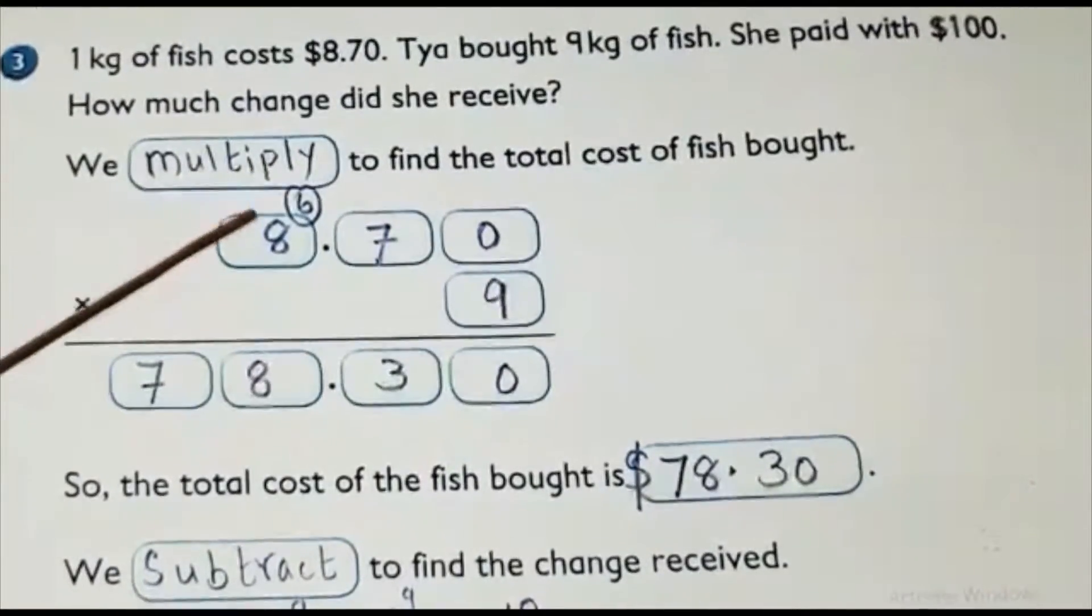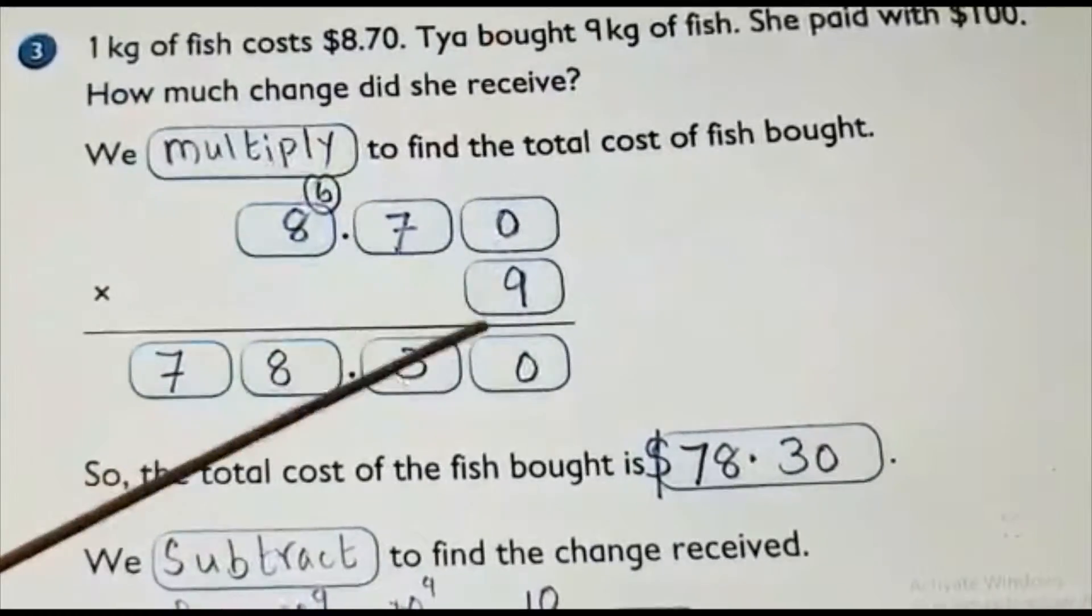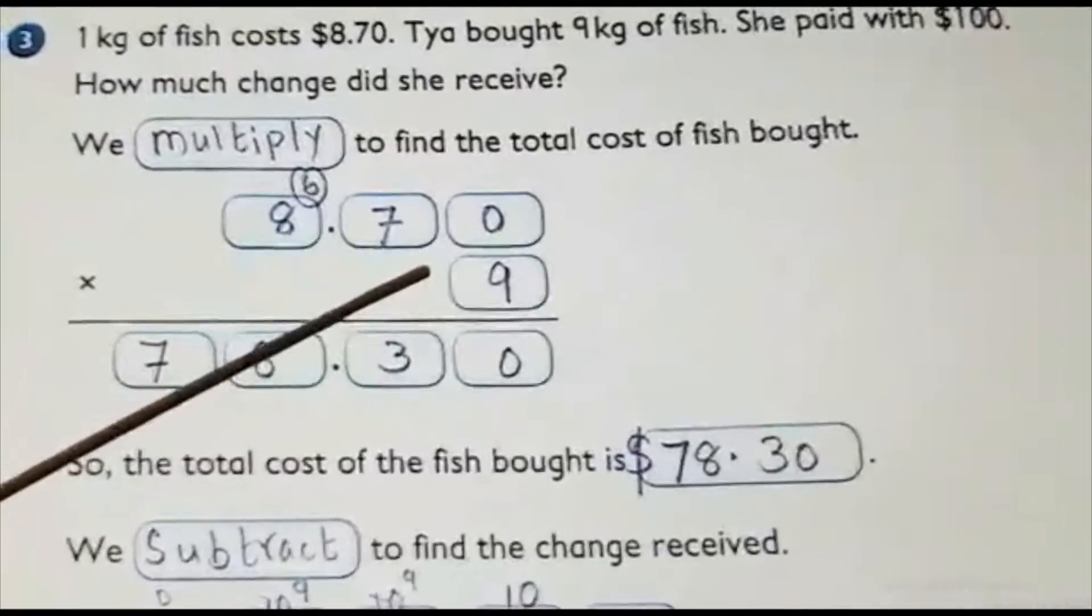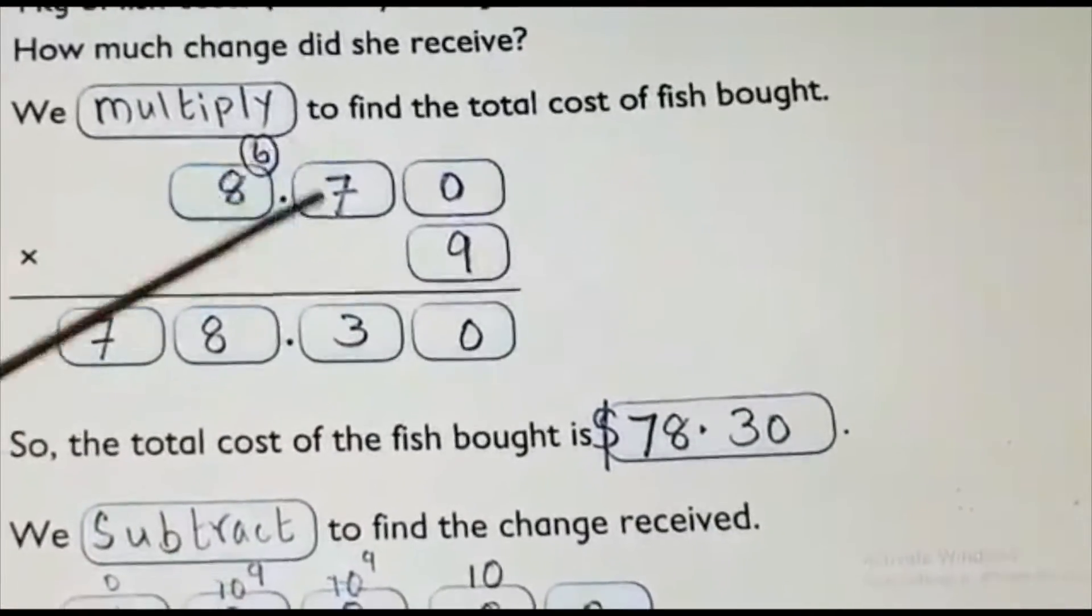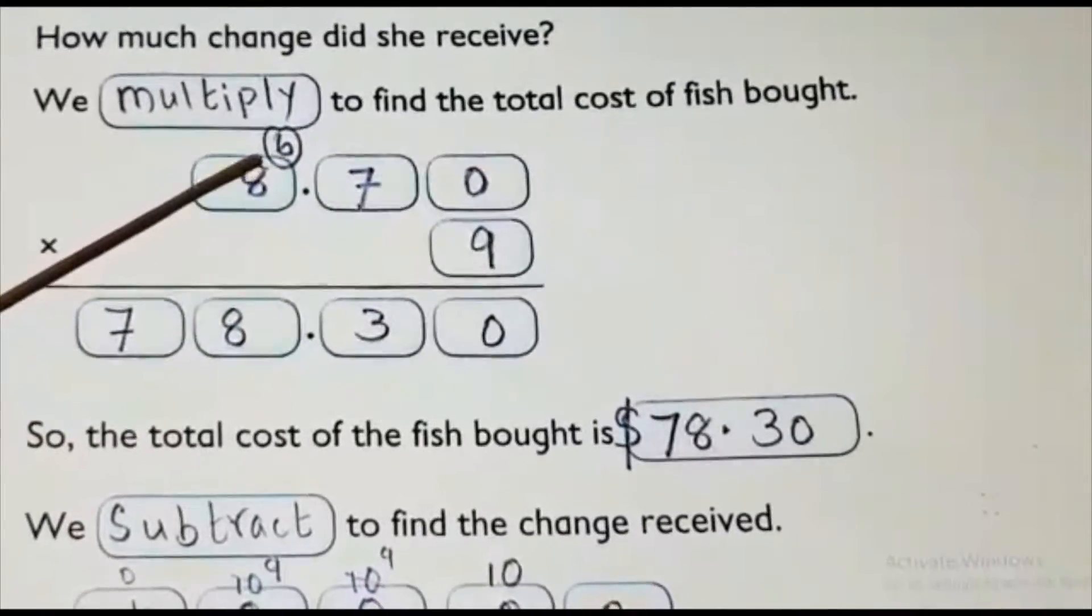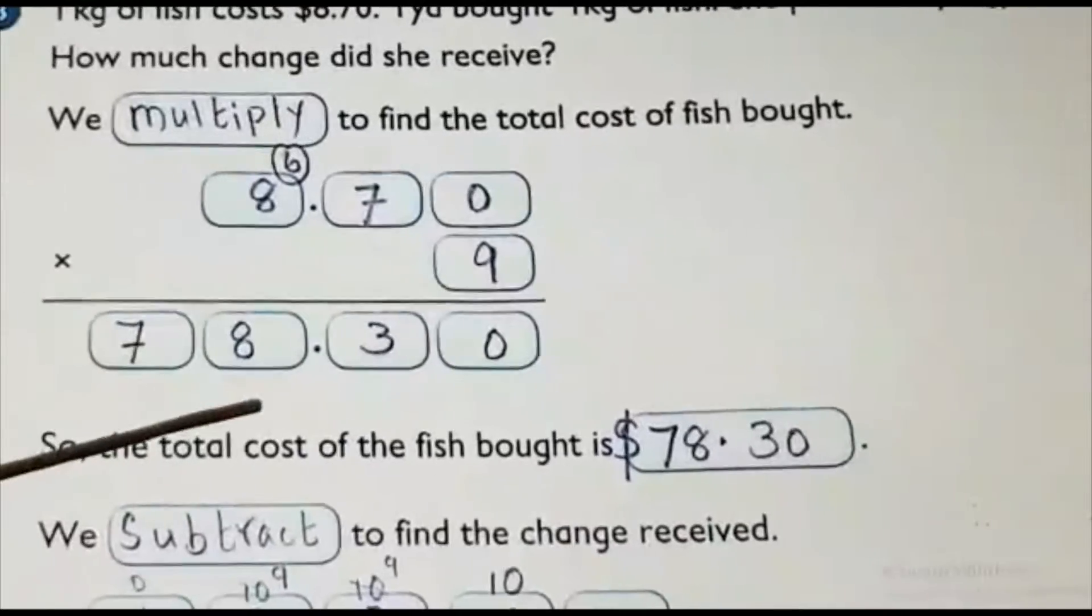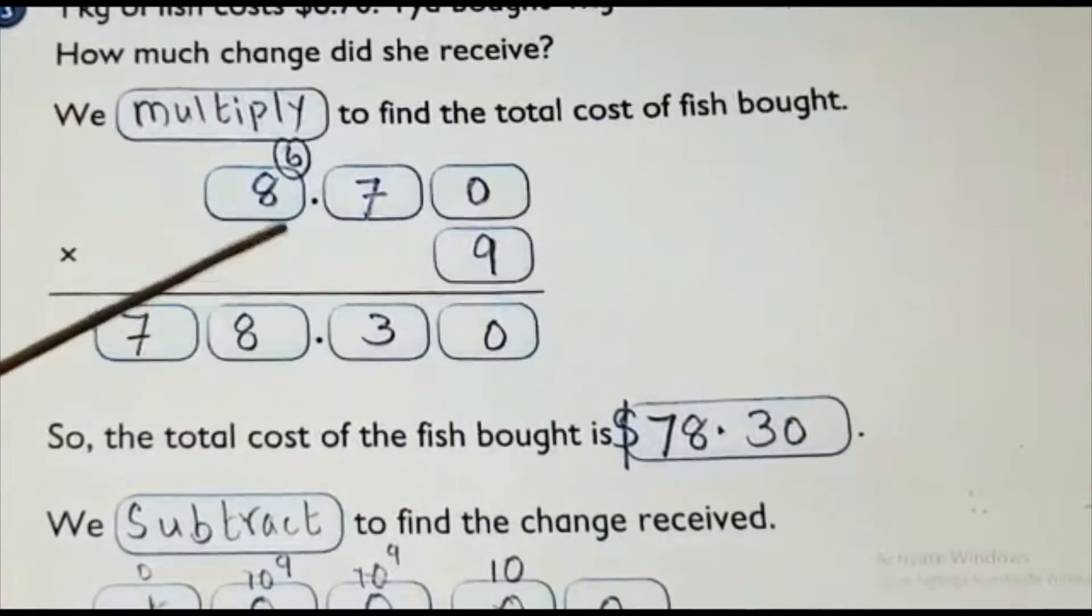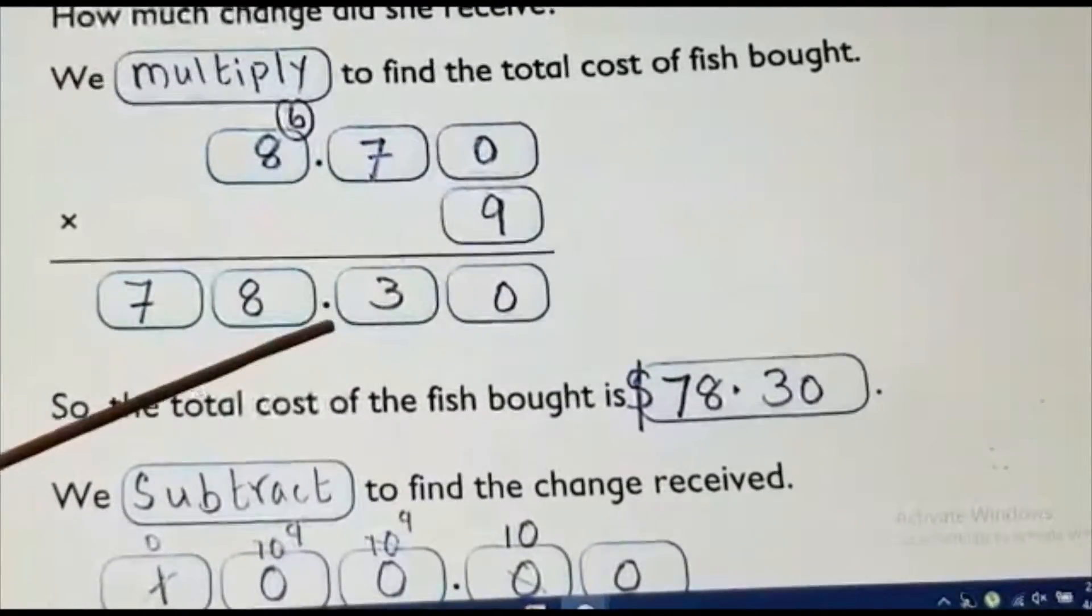We will multiply. Which number? 8.70 multiply because 9 kg is there. Multiplying 9. 9 multiply 0, 0. What is 9 multiply 7? 63. 3 here and carry over 6 here. 9 multiply 8, 72. 72 plus 6 is 78. It is 78.30. Decimal multiplication means nothing is there. We are just writing like that and putting the decimal line. Two places here, two places here also.